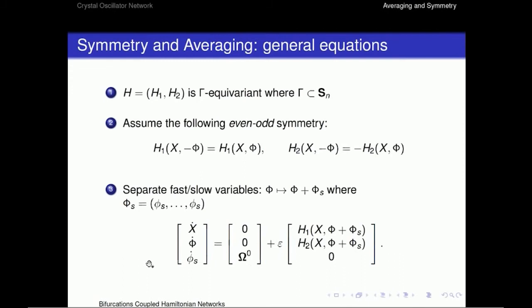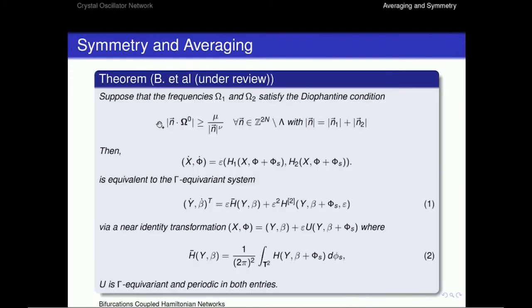Now, in this formulation, what we can do is use a technique using Diophantine condition on the frequencies omega 1 and omega 2. So if it satisfies such a Diophantine condition, then the slow system in X and capital X and capital P is equivalent to this gamma-equivariant system in Y and beta, where the first term is the average system, and then we have some remainder term H2. This H-bar is the average system. And the whole transformation is gamma-equivariant and periodic in both entries.